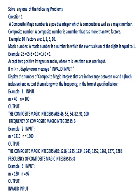Question 1: Input two positive integers M and N where M is less than N, and print all the composite magic integers between M and N and the frequency of the composite magic integers.